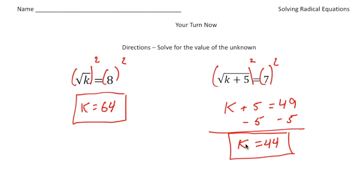And this one should have been k equals 44. Remember, for any equation, you can always plug in the value to make sure it's right. So 44 plus 5 is 49. And the square root of 49 is 7. And there it is. Alright, how'd you do?